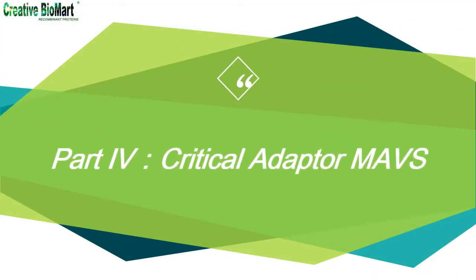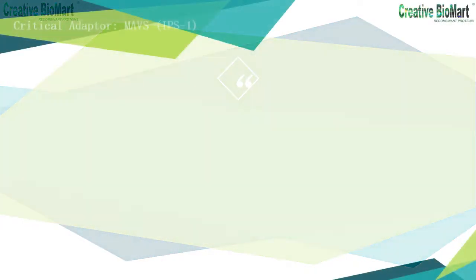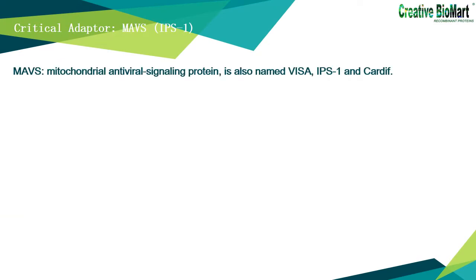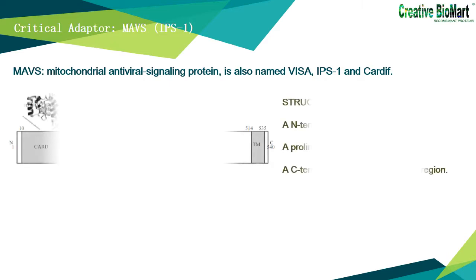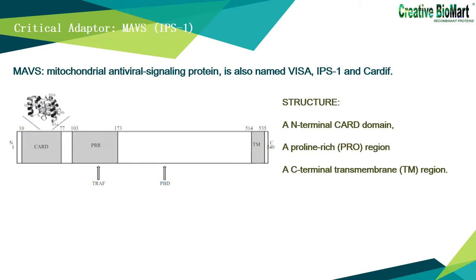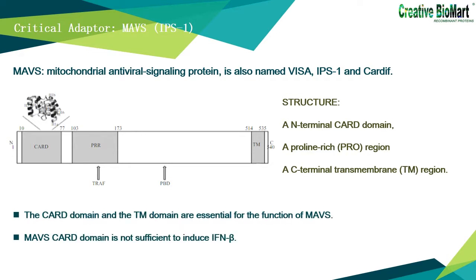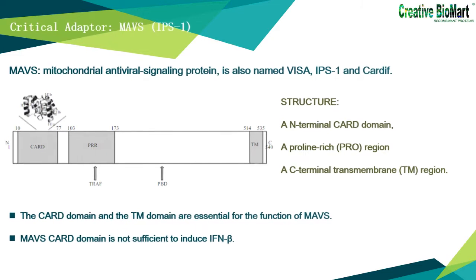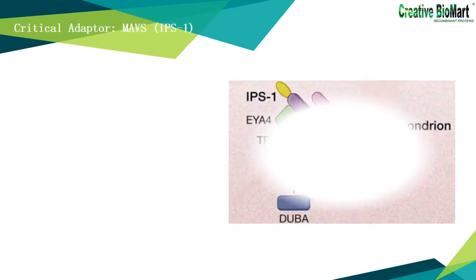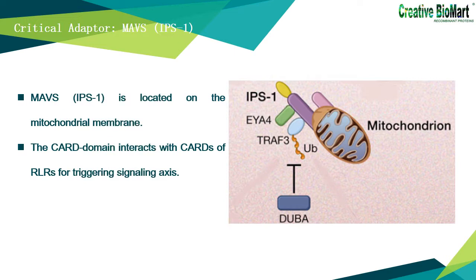Part 4: We introduce the critical adapter protein MAVS. Recent studies identified a CARD domain-containing protein that acts downstream of RIG-I. This protein, independently identified by four different groups, has been called MAVS, IPS-1, VISA, and CARDIF. Besides the N-terminal CARD domain, MAVS also contains a proline-rich region and a C-terminal hydrophobic transmembrane region. The CARD domain and the TM domain are essential for MAVS function. MAVS is located on the mitochondrial membrane, where its CARD domain interacts with CARDs of RLRs to trigger signaling. When cleaved from mitochondria by HCV NS3-4A protease, RLR signaling activity disappears.